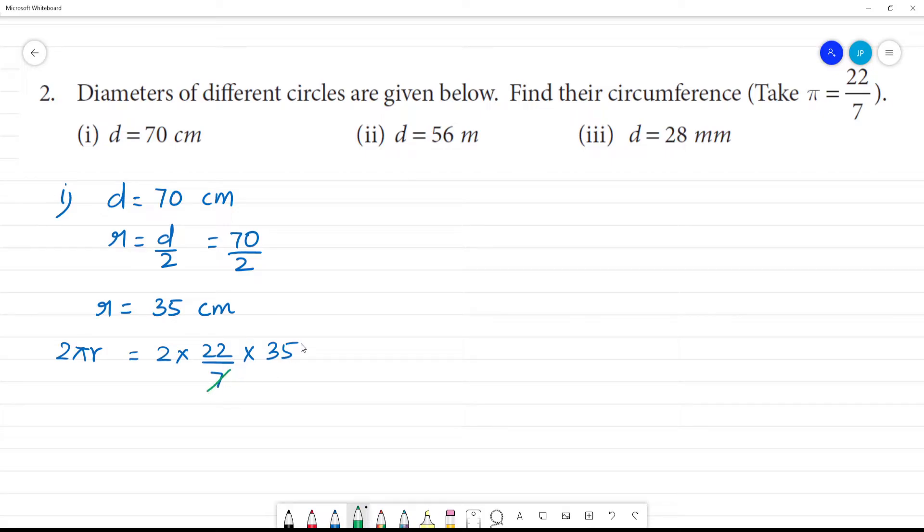Now cancel: 1 times 7 is 7, and 5 times 7 is 35. Now 5 into 2 is 10, 10 into 22 is 220 centimeters. Clear? First one, 220 centimeters.